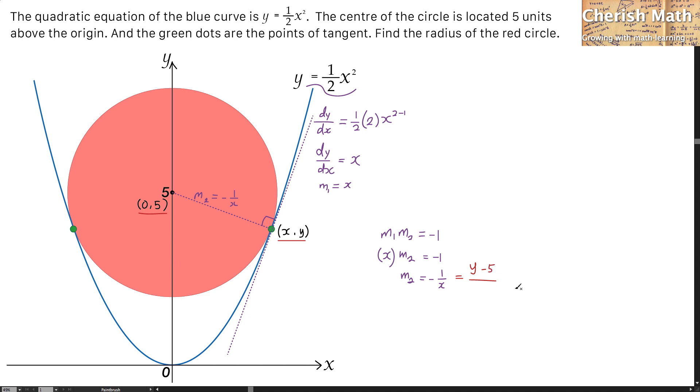And that's the difference divided by the difference of the x, that is x minus 0. And I equate it to the equation of negative 1 over x.